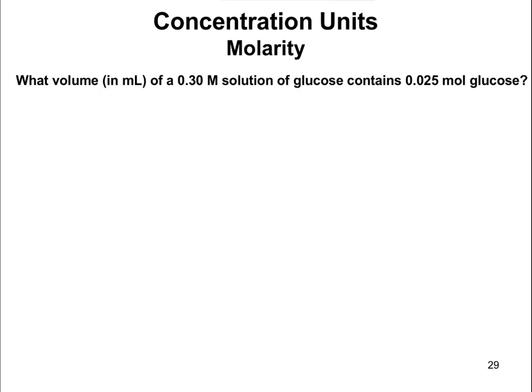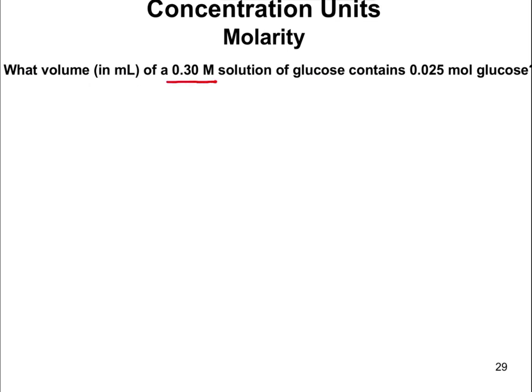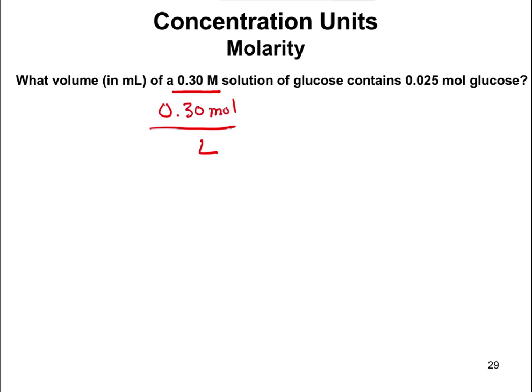Here's an example: what volume of a 0.30 molar solution of glucose contains 0.025 moles of glucose? Whenever you have a molarity like 0.30 M, rewrite it as 0.30 moles per liter — that helps you remember you have a conversion factor. The problem asks for volume in milliliters, so once we get to liters, we'll convert to milliliters as one extra step at the end.